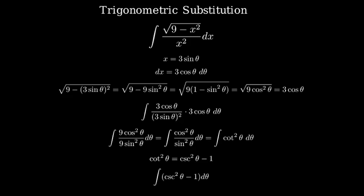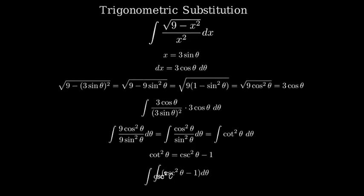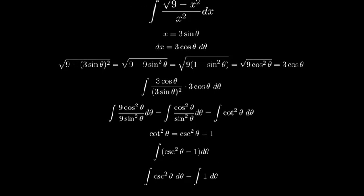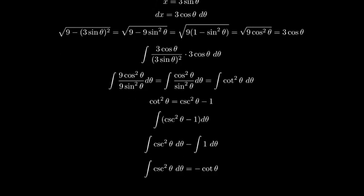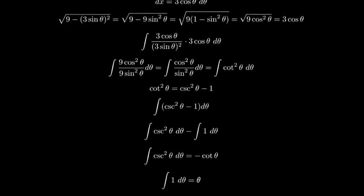This integral can be separated into two integrals: the integral of cosecant squared theta d theta minus the integral of 1 d theta. Now we can evaluate each part. The integral of cosecant squared theta d theta is negative cotangent theta, and the integral of 1 d theta is theta.